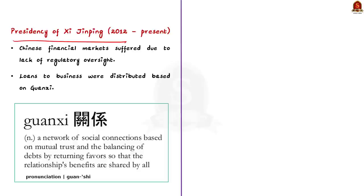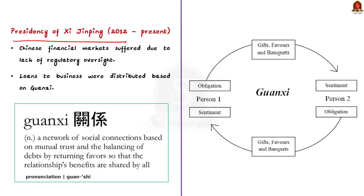The first challenge since 2012 was lack of regulatory oversight. The Chinese financial market suffered because loans to businesses were often distributed based on personal relationships rather than strong financial sense. This hindered the effective regulation of the financial sector and is one of the major challenges faced by the Chinese economy.